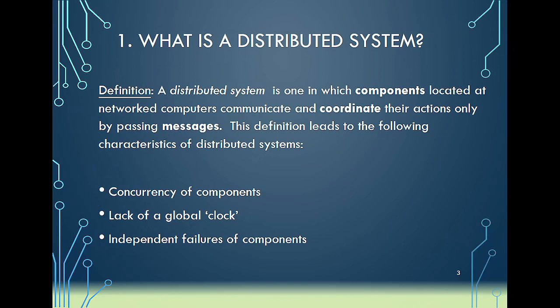So what is a distributed system? The definition involves key aspects: components, coordination, and messages. We can say that a distributed system is one in which components are located on networked computers that communicate and coordinate their actions only by passing messages. If you take a look at your computer or laptop, we refer to that as a standalone, centralized system.